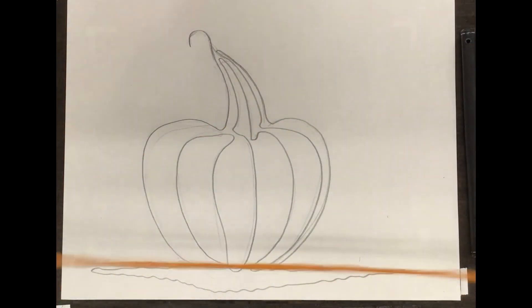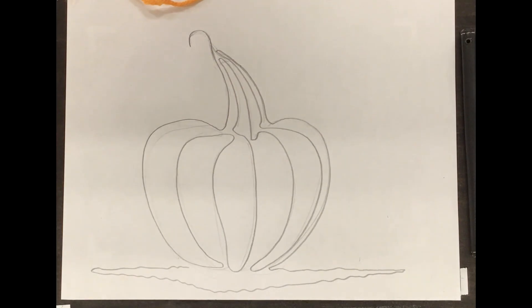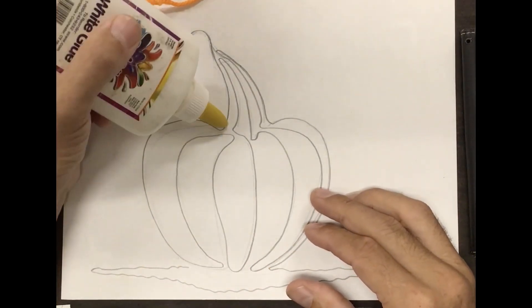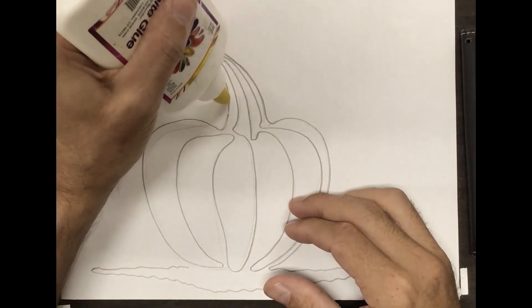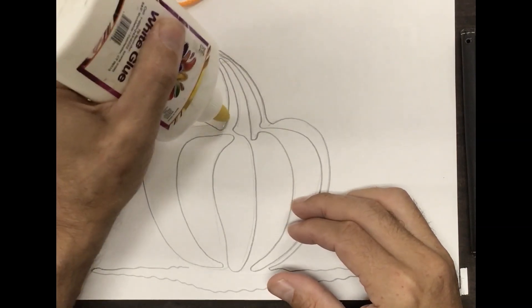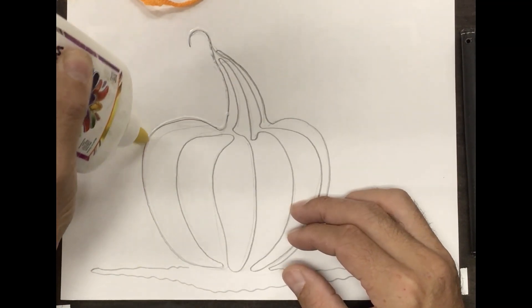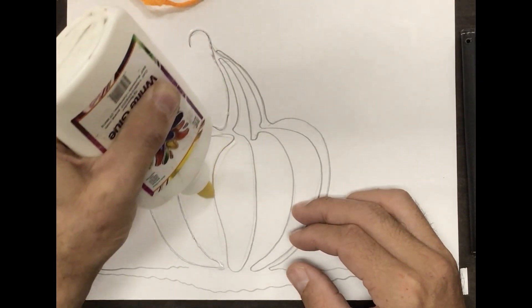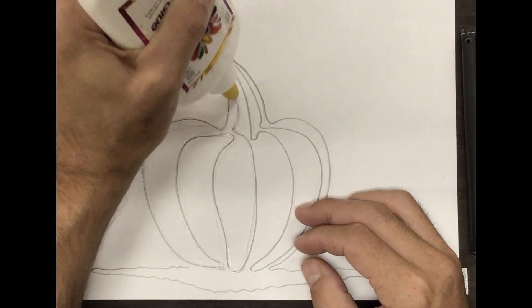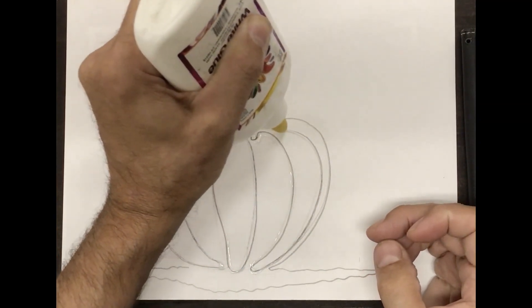And of course we're gonna need something to stick it down with, so I have glue. I'm just gonna go ahead and go on my line, tracing over it with the glue. Now you don't need a whole lot of glue, but you want to have enough so that it's not gonna dry up on you when you lay down your yarn. You could always reapply it.